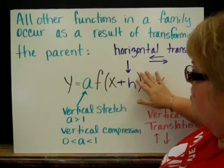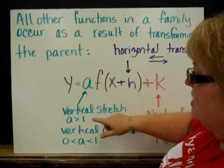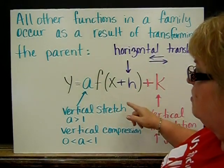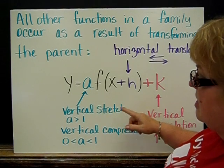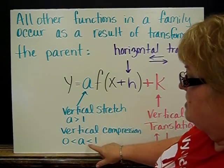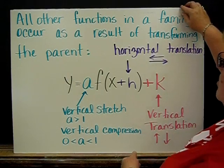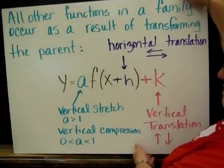a is a number that we're multiplying times our function. If a is greater than 1, we're doing a vertical stretch. If a is between 0 and 1, meaning it's a fraction, we're doing a vertical compression.